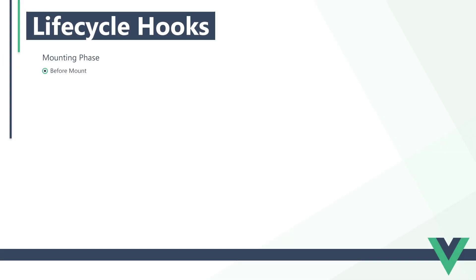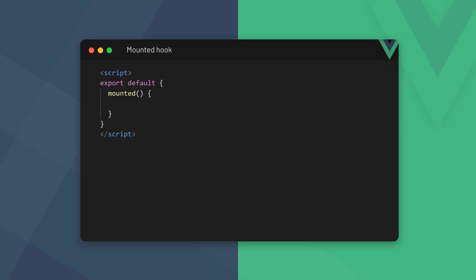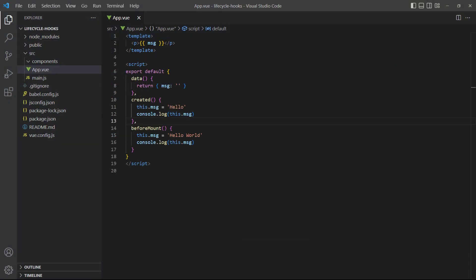The second step in the mounting phase is the mounted step. This step uses the mounted lifecycle hook and is invoked when Vue renders our content in the browser. At this point, our app is shown to the user. The DOM is also now ready for access and manipulation, so the user can start interacting with our app. When they do, a new lifecycle phase will trigger. The mounted hook counts as an update — if we change the text, it will trigger the updating phase.